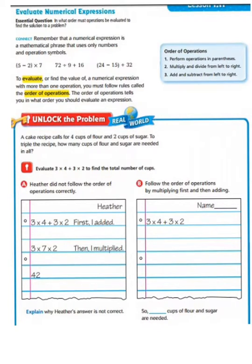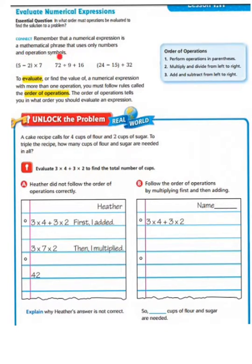Let's begin by taking a look at our essential question: In what order must operations be evaluated to find the solution to a problem? A numerical expression is a mathematical phrase that uses only numbers and operation symbols. It is not going to have an equal sign, and it is not going to have an answer.